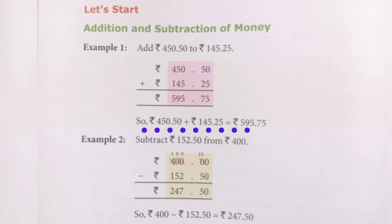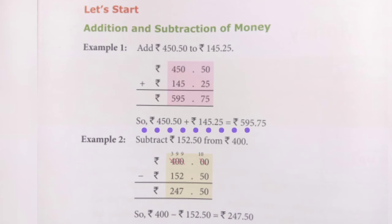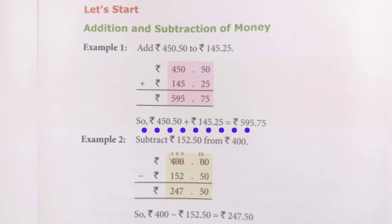Now add rupees: 0 plus 5 is 5, 4 plus 5 is 9, and 4 plus 1 is 5. So the answer is 595 rupees and 75 paisa. Answer: 595.75.